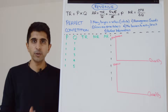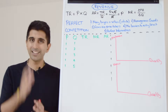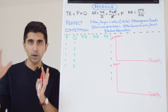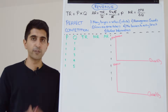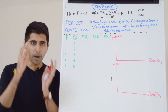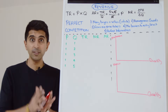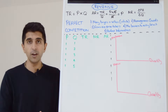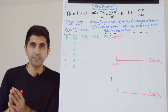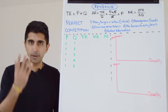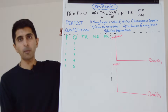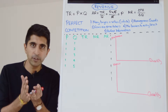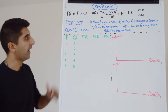What will our revenue curves look like? Well, it depends on the level of competition. There can only be two groups of competition: perfect competition — the most intense, insane competition — or imperfect competition like a monopoly. We're going to look at perfect competition first and see what our revenue curves look like there.